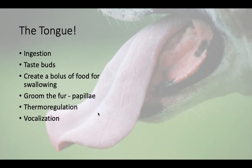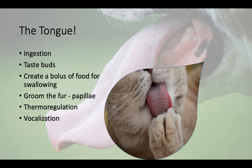The tongue is an important part — it starts off mechanical digestion, moves food around, and is responsible for ingestion. It has taste buds, creates a bolus of food for swallowing, and can groom fur. Cats have hooked papillae like velcro. The tongue also plays a role in thermoregulation — dogs pant to release heat, vasodilating the vessels on their tongue. It also assists with vocalization.